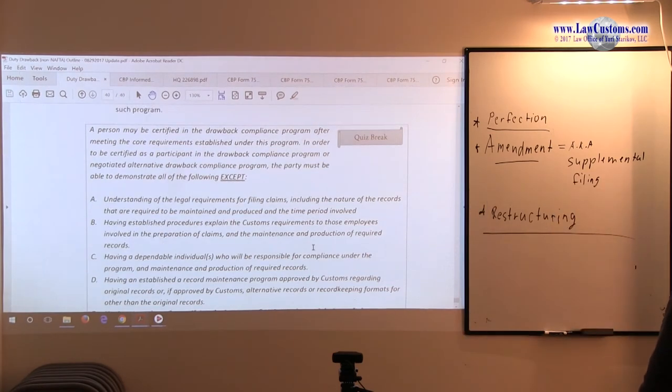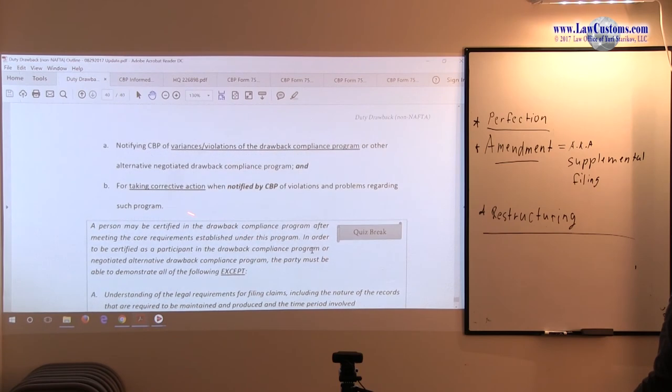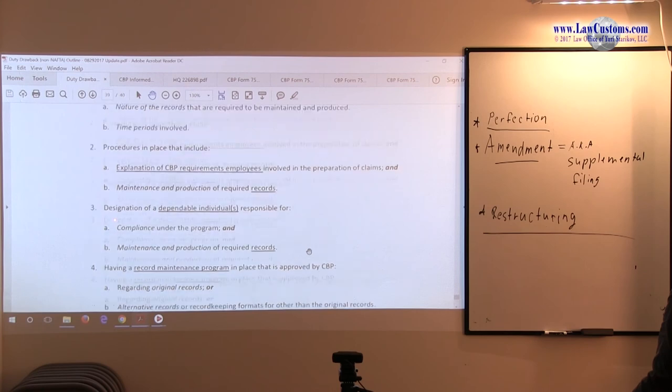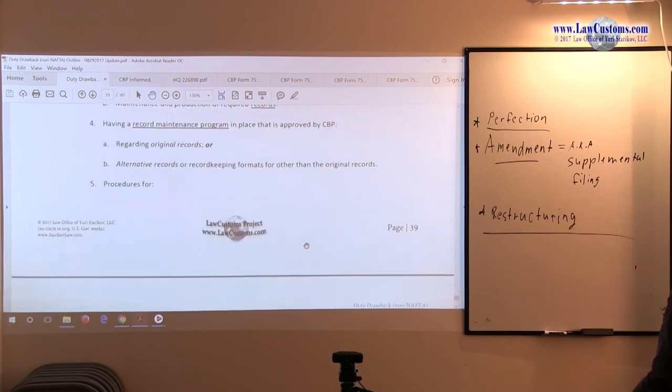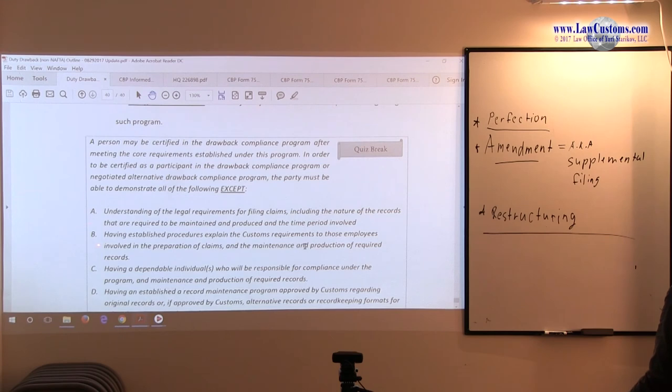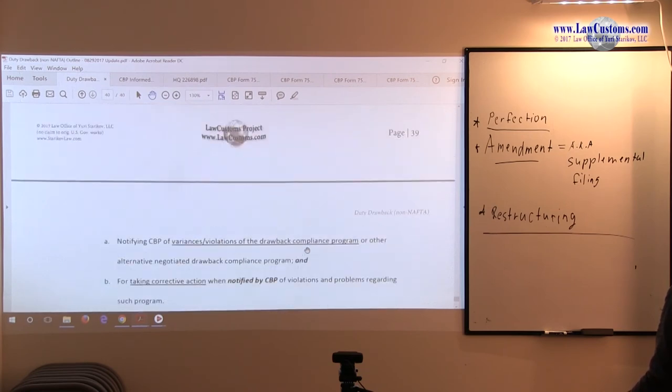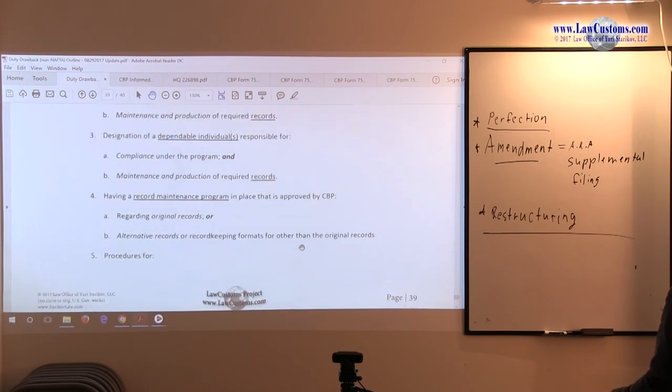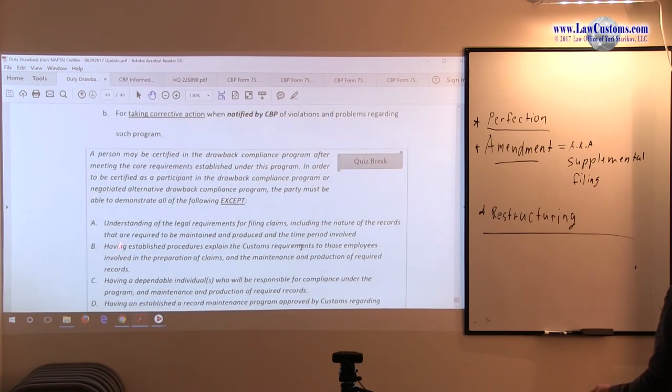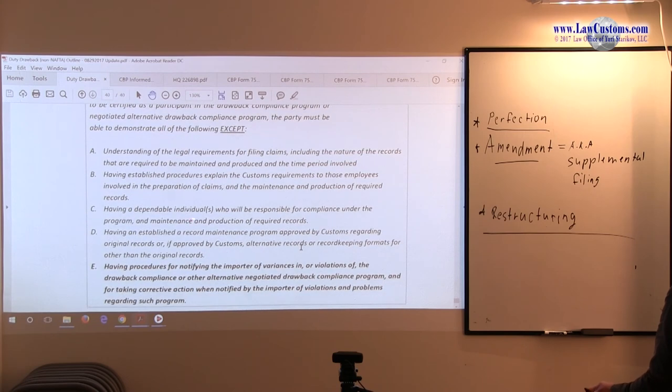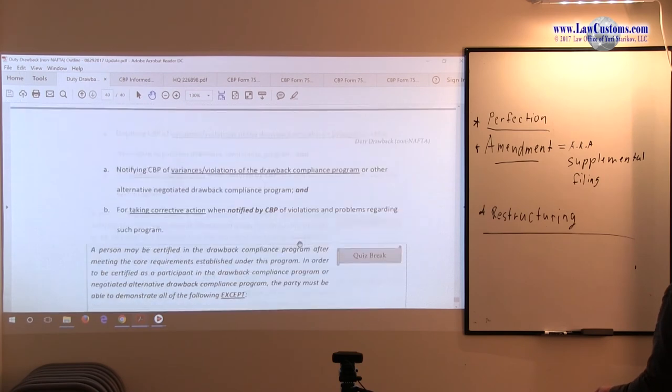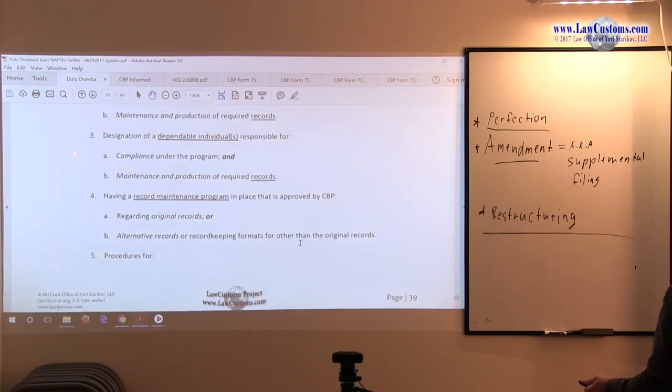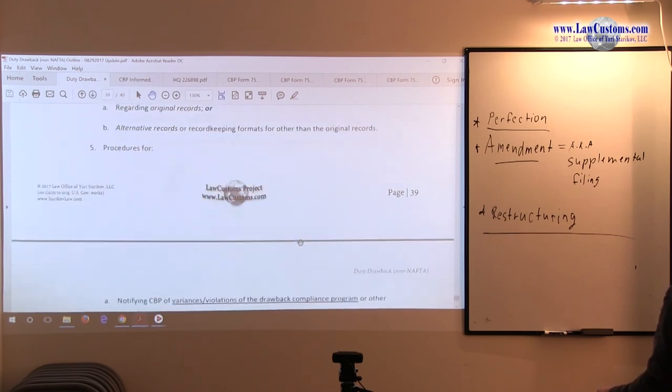So, you go through the list and you see what's right and what's wrong. Understanding legal requirements for filing claims is number one on the list. So, that's not an exception. So, we move on. Having established procedures to explain the customs requirements to those employees involved in preparation of claims. So, do we have those procedures? Yes, number two. Procedures in place for the explanation of CBP requirements. So, B is not an exception. Having dependable individual who will be responsible for compliance. Is that on the list? Dependable individual is three on the list. So, this is not an exception. So, we move on.